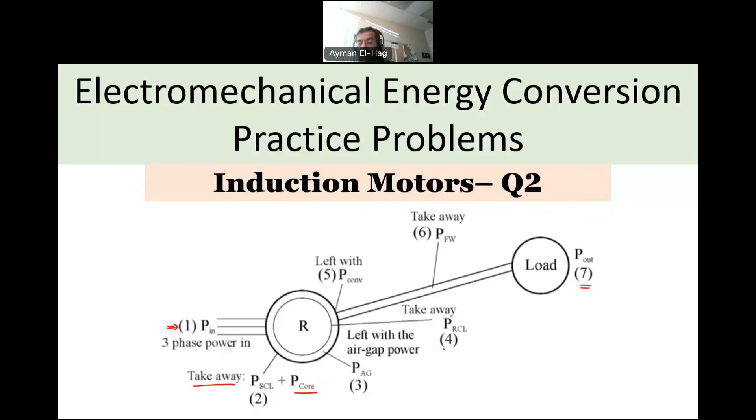Now, when we take from that number four, which is PRCL, or the copper loss in the rotor, we get P convert, the power that is now ready to be converted to the mechanical power. When we take from that the friction, windage, and some miscellaneous losses, then we will get the P out, the output power that reaches the shaft of the rotor and connect it to our load.